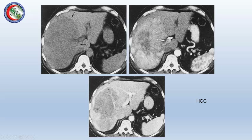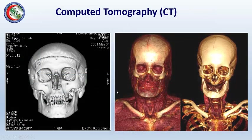An example of contrast-enhanced CT is a triphasic study of the liver: first an image without contrast, then after contrast in the arterial phase, then in the venous phase. A lesion taking a lot of contrast in the arterial phase and washing out in the venous phase is a behavior typical of a malignant liver mass, most commonly hepatocellular carcinoma.